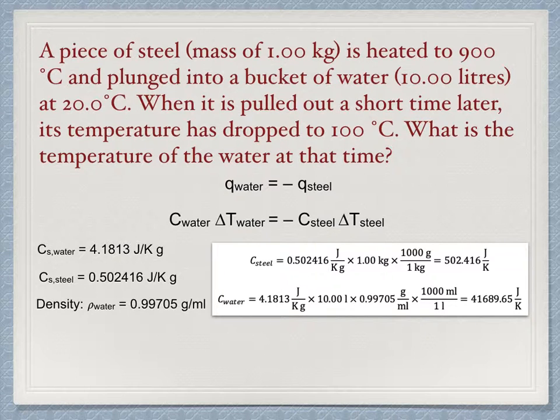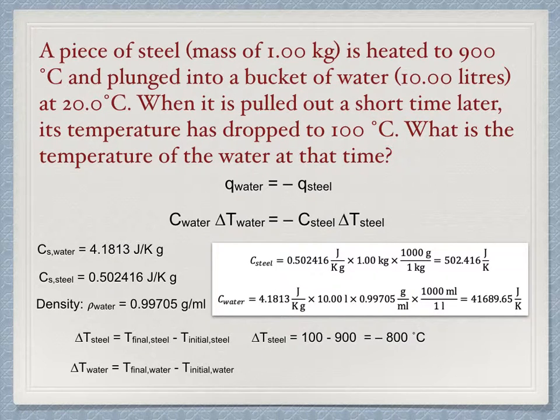Now what about the delta T terms? Well, delta T is always T_final minus T_initial. The thing to watch out here is that delta T is not largest minus smallest. Delta T can be positive or negative. ΔT_steel equals T_final_steel minus T_initial_steel. ΔT_water equals T_final_water minus T_initial_water. We can substitute some numbers in here. Three of these temperatures were given in the problem. The fourth is the answer we are seeking. ΔT_steel equals 100 minus 900 equal to minus 800 degrees Celsius. Be sure to remember that the starting temperature is 900 and ending temperature is 100 for the steel. The change in temperature is minus 800 because the temperature drops.